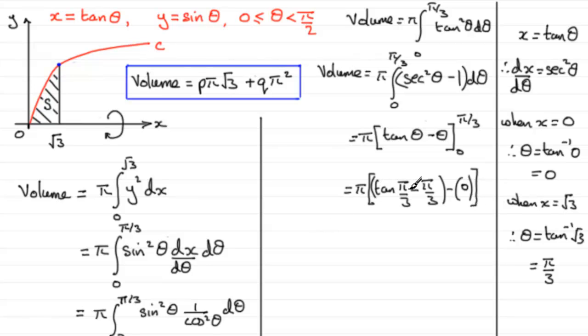What is the tan of pi upon three? Equivalent of tan of 60 degrees, well, that's root three. So we've got pi multiplied by root three, and then we've got minus pi upon three. So how's this looking?